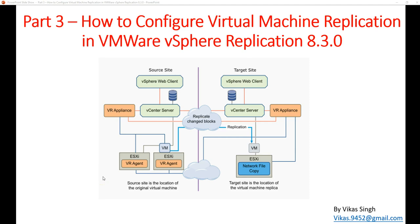Hi friends, welcome to my channel. This is Part 3 in the VMware disaster recovery series where we are using a combination of vSphere Replication and SRM. In the last video we installed and configured VMware vSphere Replication 8.3.0 on both the primary production and DR sites. In this video we are going to configure site replication for two virtual machines.